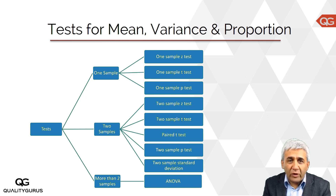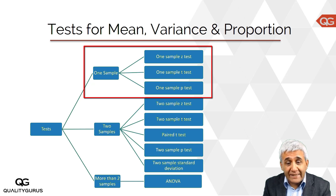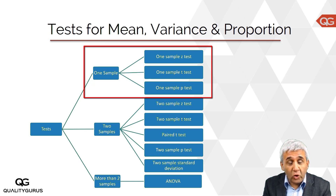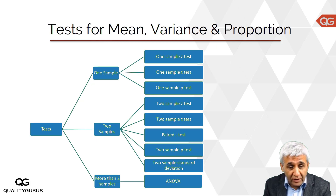Let's understand what we have done so far. We have done one-sample Z test, T test, and P test. In all these cases, we were drawing one sample from the population and based on that, we were deciding about the population.